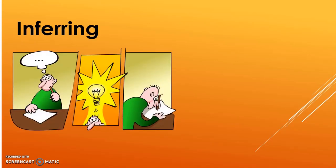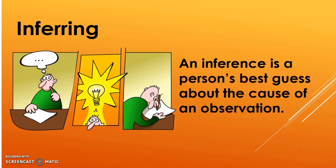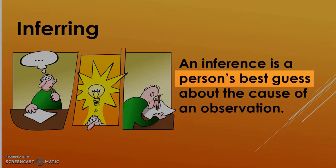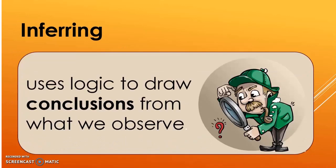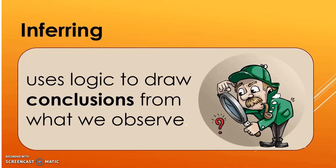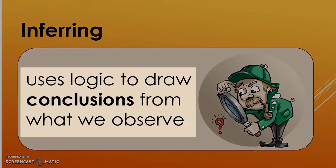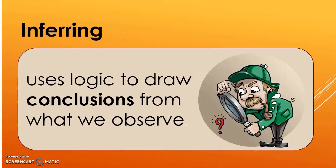The first thing about inferring is that it is a person's best guess. An inference is a person's best guess about the cause of an observation. Inferences are based on observations, but not only observations — when you draw an inference or a conclusion, you use your logic on what you have observed.